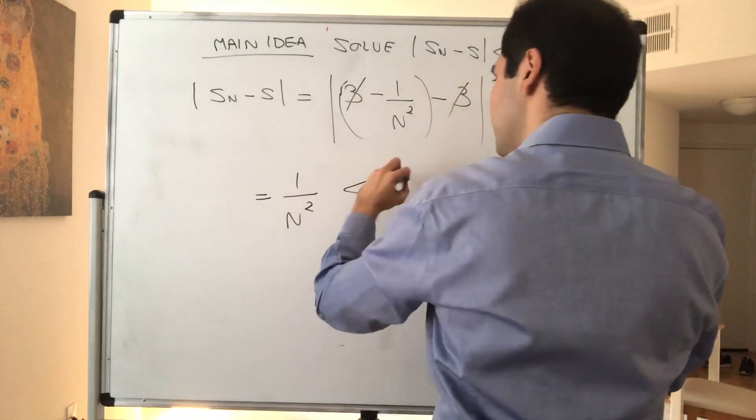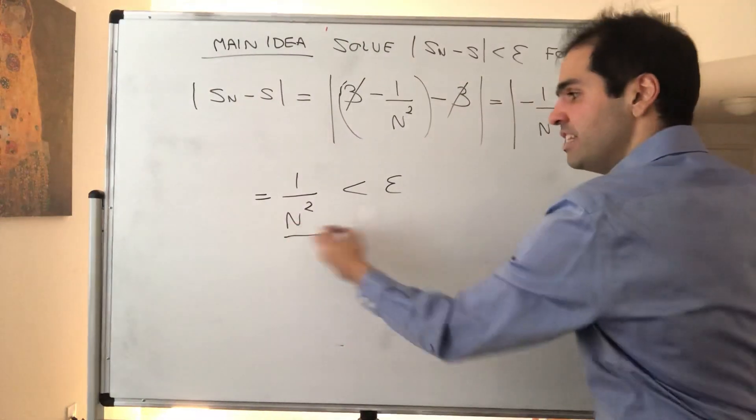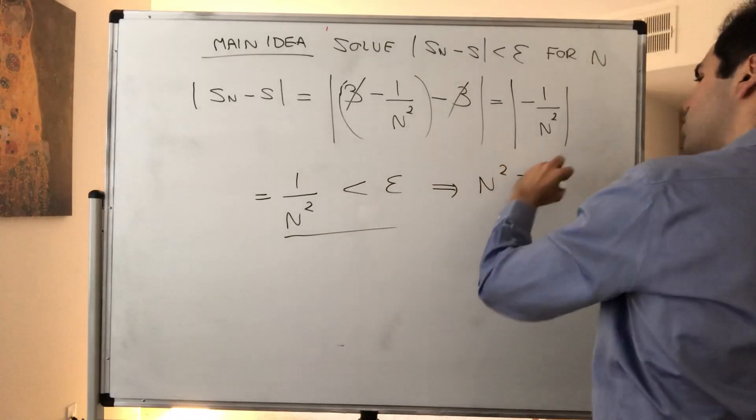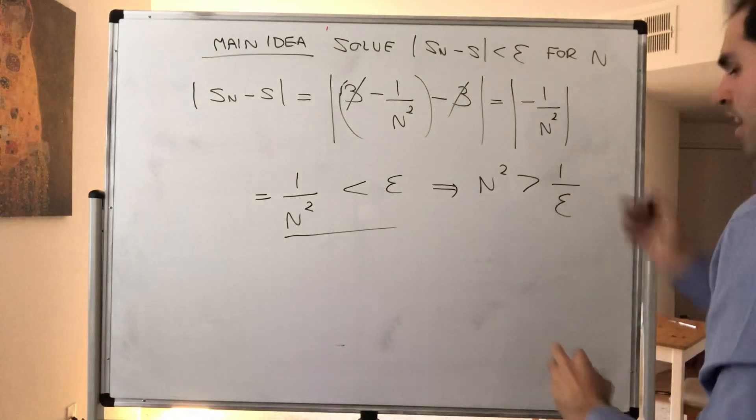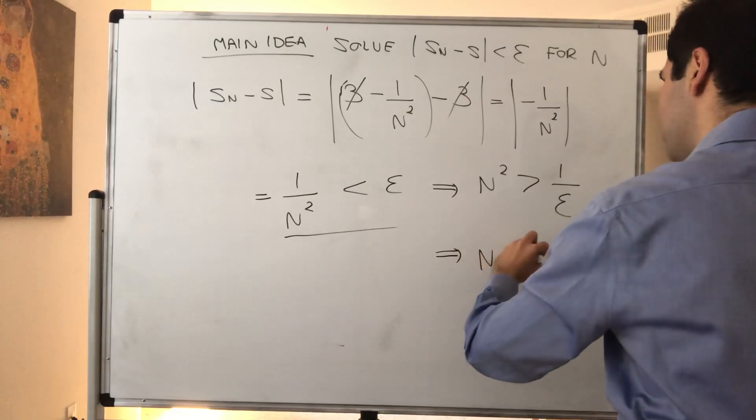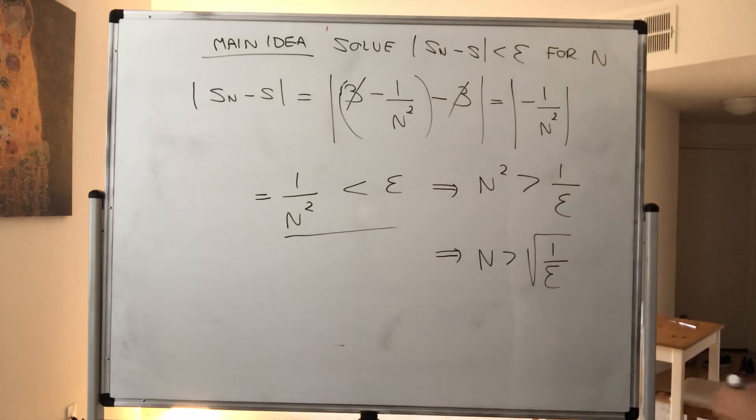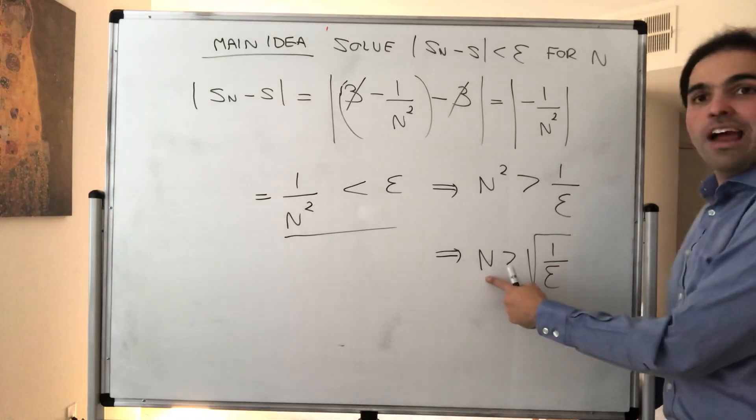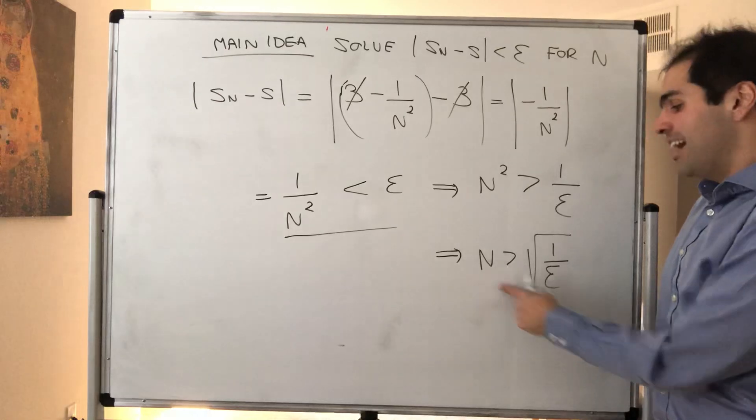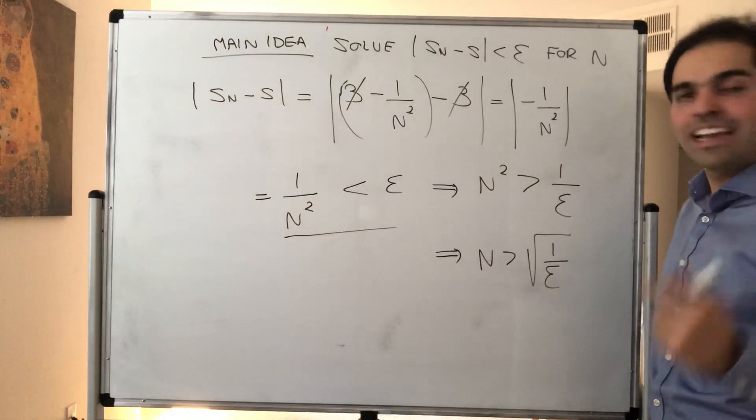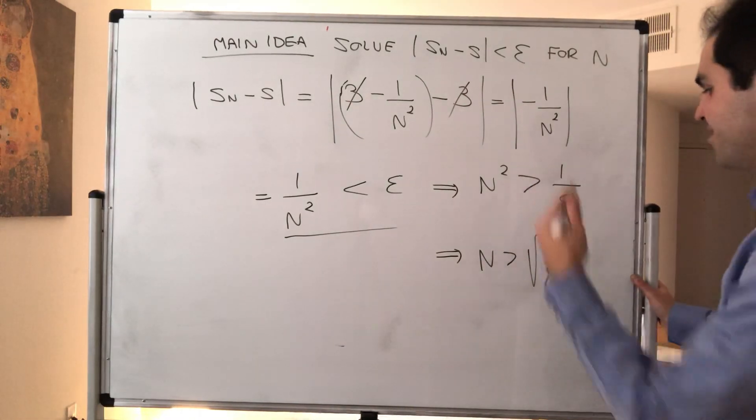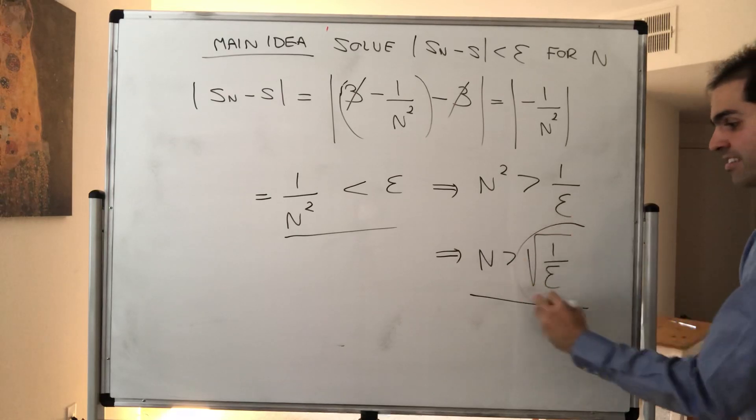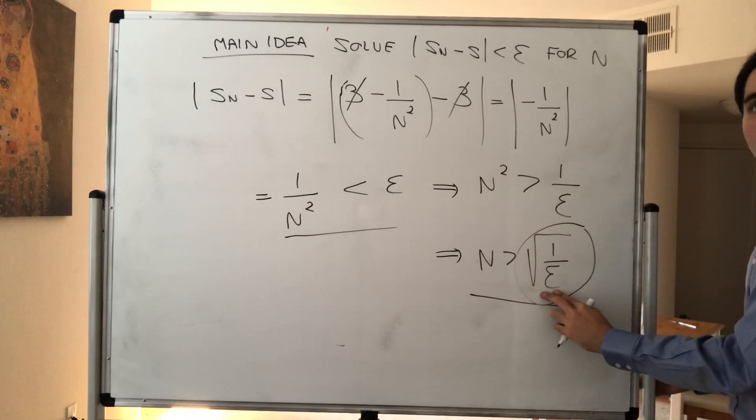So the absolute value of minus 1 over N squared is just 1 over N squared. And the point is we want this to be less than epsilon, which again gives you an equation for N which you would like to solve. So what we get is N squared is greater than 1 over epsilon. And then just take square roots, and this implies N is greater than square root of 1 over epsilon. You might say, what about the other thing? N is less than minus square root of 1 over epsilon. Remember, N is a positive integer. So in particular, we don't care about the other inequality because that's just for negative integers. If N is less than minus square root of blah blah, it means N is negative.